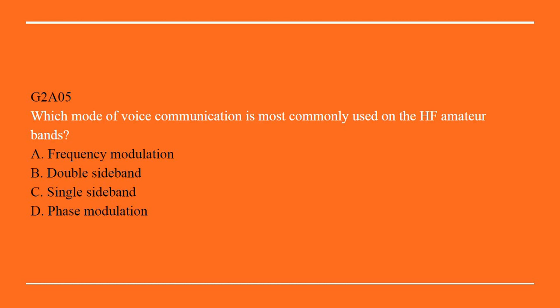G2A05: Which mode of voice communication is most commonly used on the UHF amateur bands? A. Frequency modulation. B. Double sideband. C. Single sideband. Or D. Phase modulation. Answer is C: Single sideband.